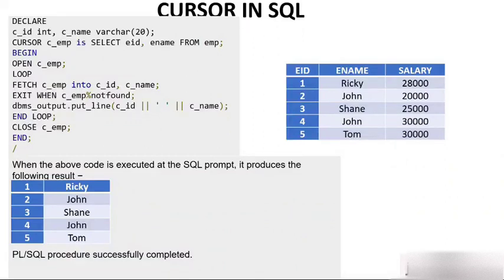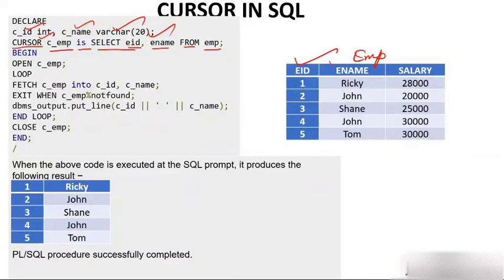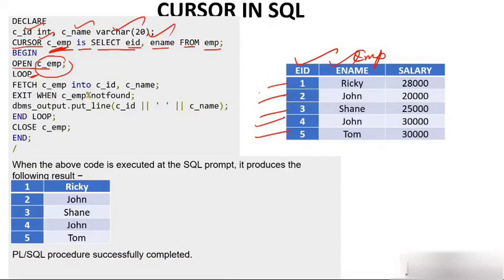Here is a complete example of cursor usage. In the DECLARE section: CID integer, CNAME varchar(20), and cursor CIMP IS SELECT EID, ENAME FROM IMP table. In the BEGIN block, you open CIMP, then use a loop. Inside the loop, you fetch CIMP into CID and CNAME. You exit when CIMP%NOTFOUND — the moment there is no more data to fetch, you exit the loop.